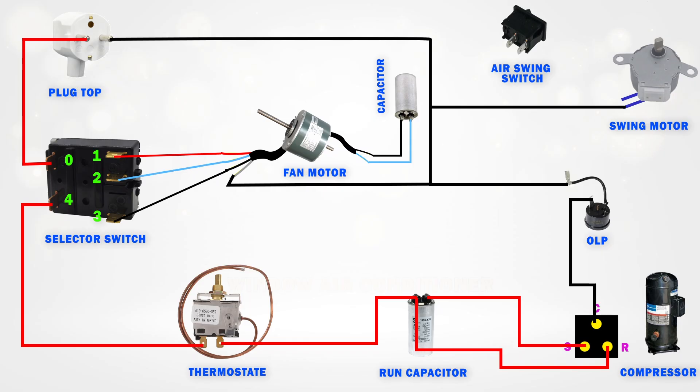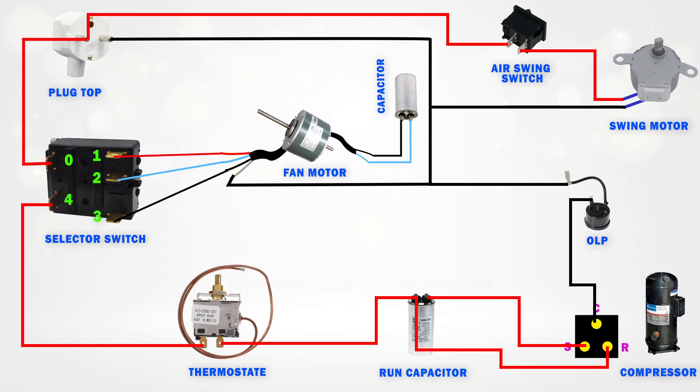Wiring the swing motor phase supply. From the phase pin of the plug top, or from terminal 0 of the selector switch, connect a wire to the input of the swing switch. Then, from the output of the swing switch, connect a wire to the swing motor to complete the phase connection. All the wiring connections are now complete.